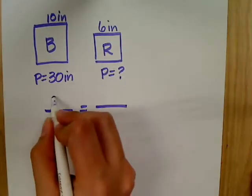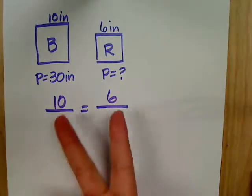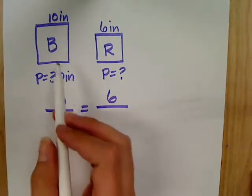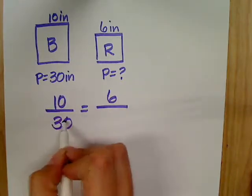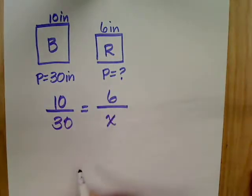So, 10 and 6, I'll go ahead and set it up like that, but if you flipped it, not a problem. And then, the perimeter of B is 30, so that belongs down here. Do I know the perimeter of the red tile? No. So I can call that X.